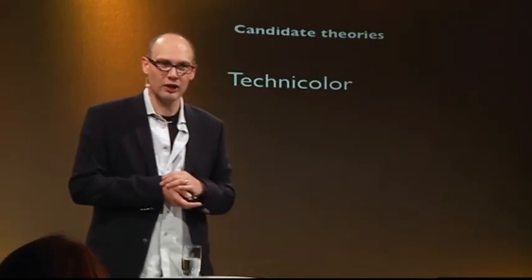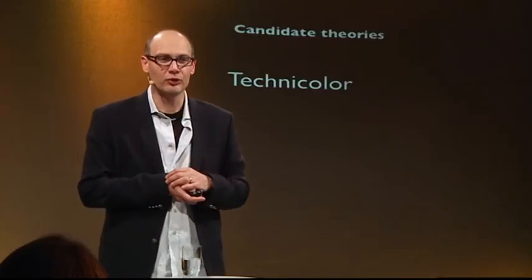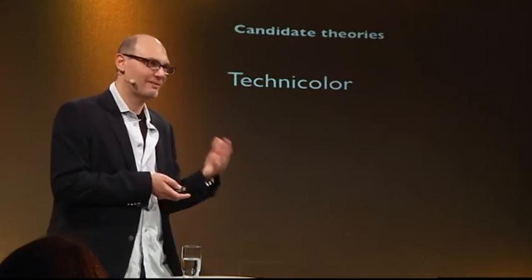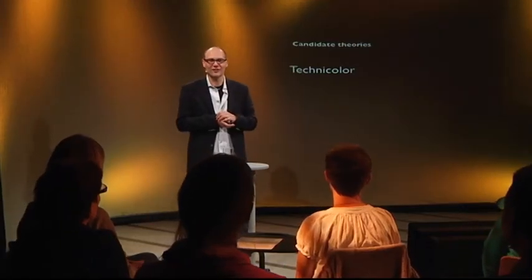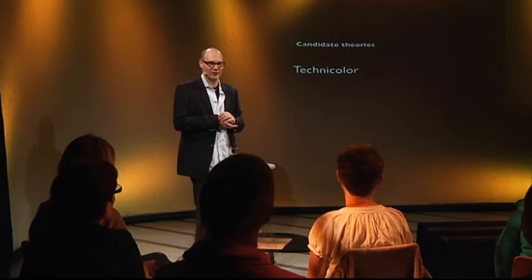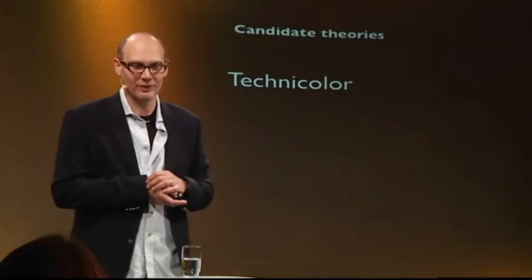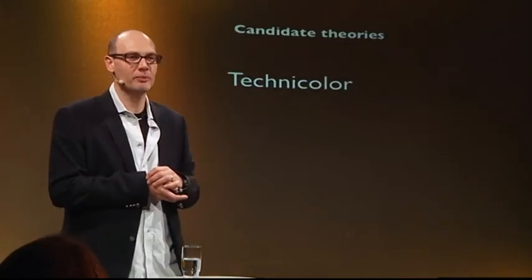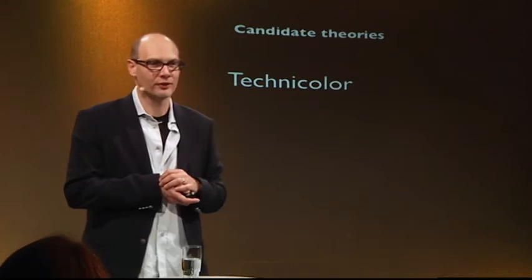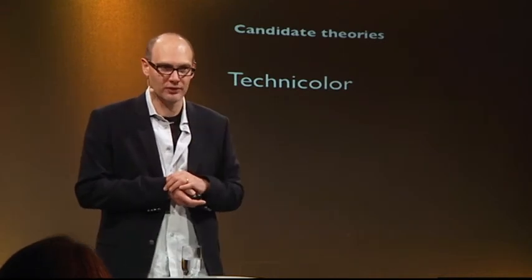One is called Technicolor. Why is it called Technicolor? Because what makes the proton are quarks, and the theory of quarks is the theory of color — quantum chromodynamics. So what if there is a dark neutron made by Techniquarks? That is called Technicolor theory. In that case, dark matter would actually be like our ordinary neutron and proton, but made by dark quarks or Techniquarks.